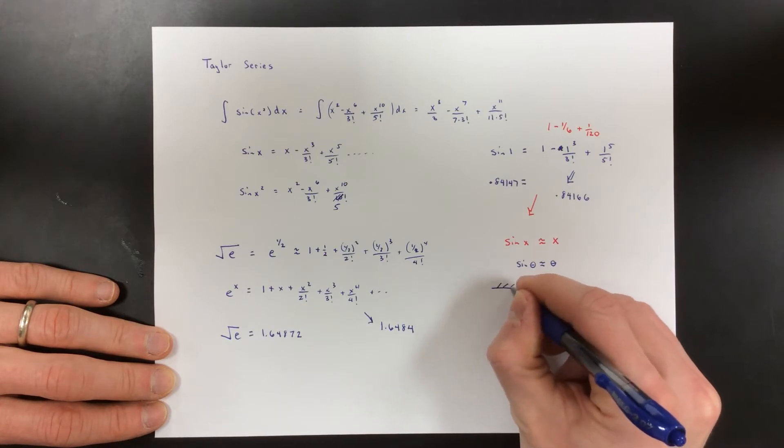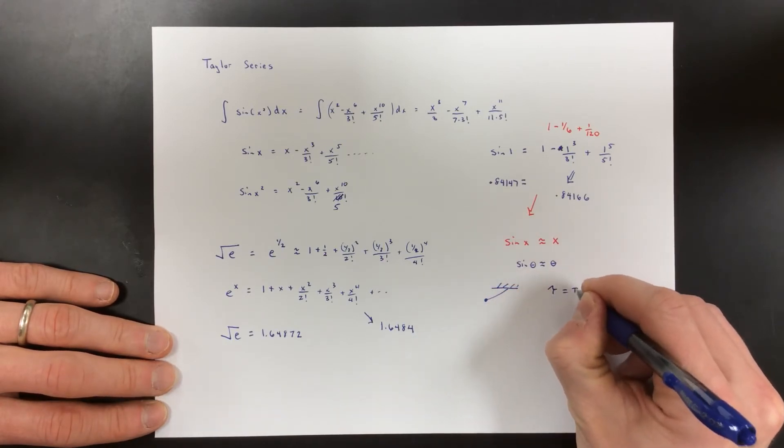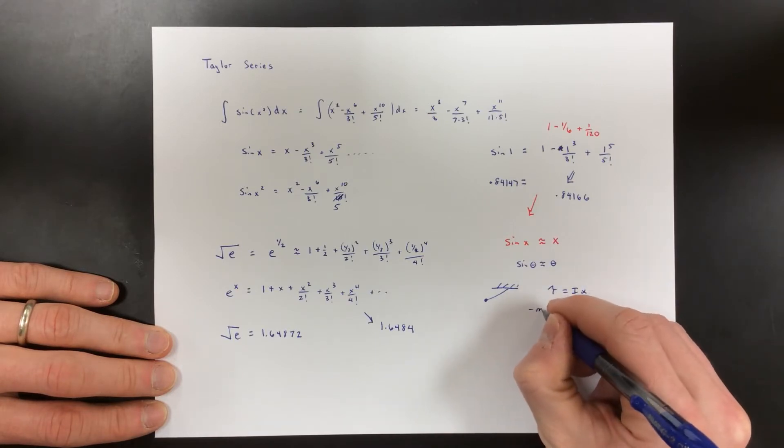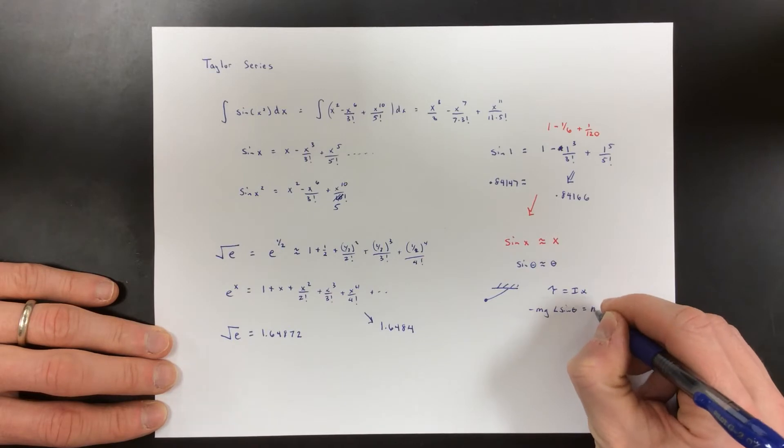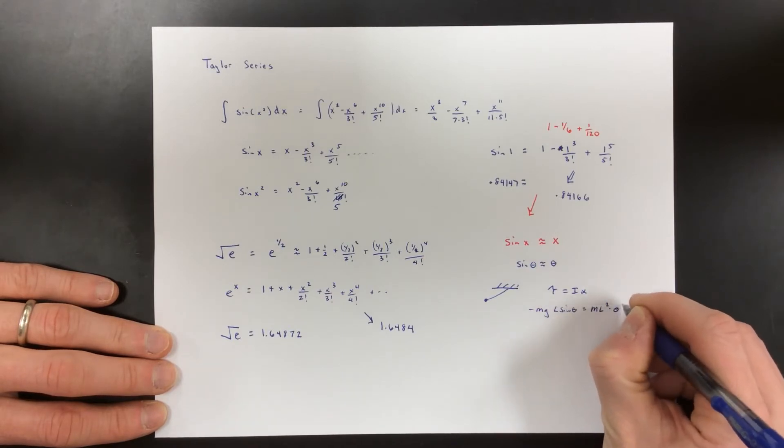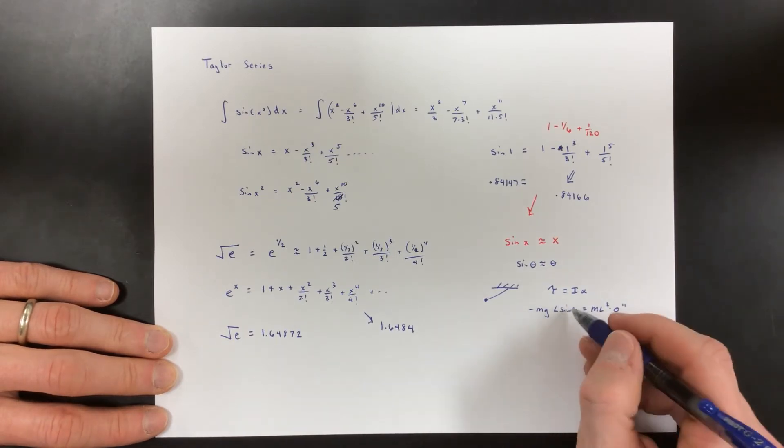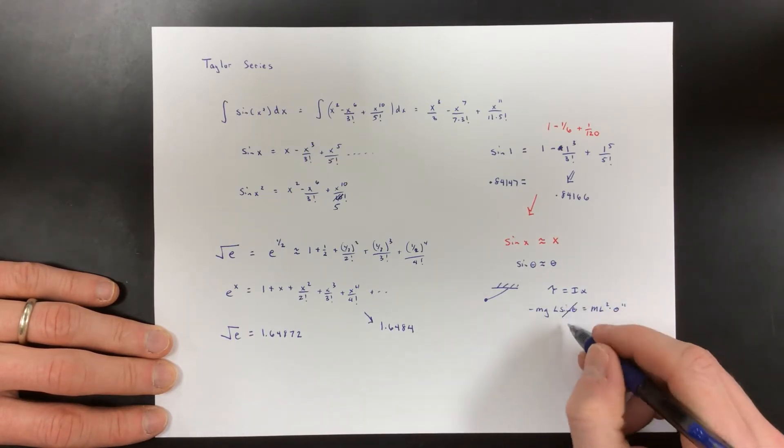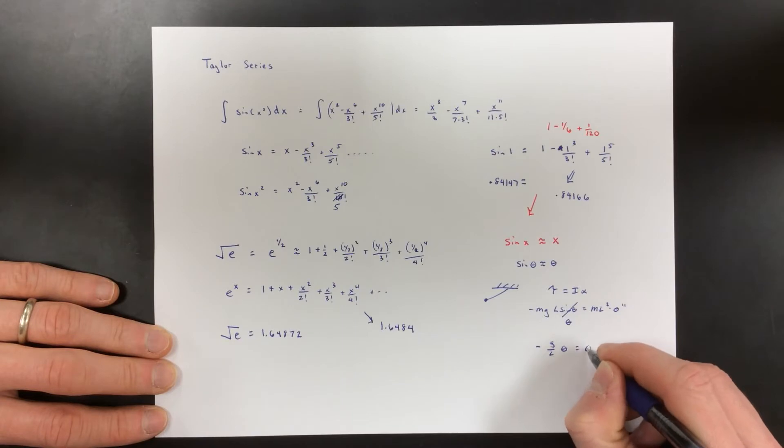So what we're going to do here, if you look at a pendulum, we would start out with torque equals I alpha. Torque is going to be negative mgl sine theta, the moment of inertia is ml squared, and alpha is theta double prime. And what we need to do, we can't solve this differential equation, it's just too hard.